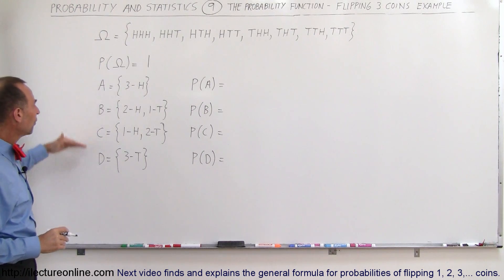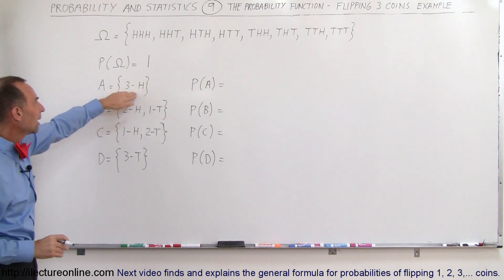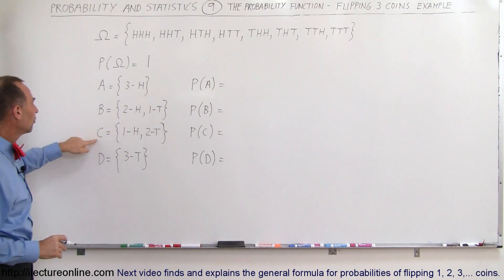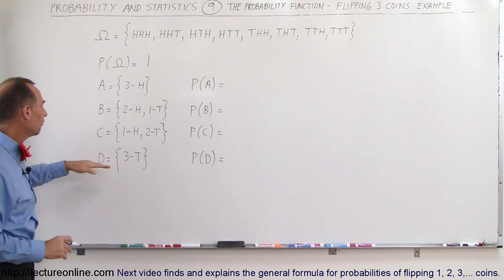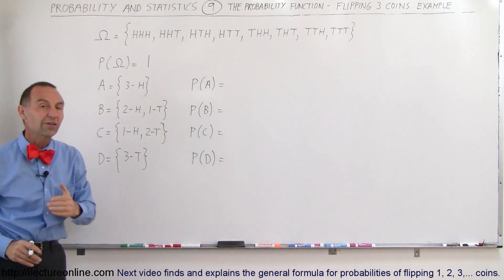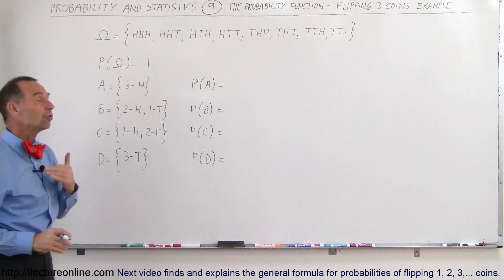Now, let's say we have four events. Event A is that you end up with three heads. Event B: two heads, one tail. Event C: one head, two tails. Event D: three tails. What is the probability that these events will occur?